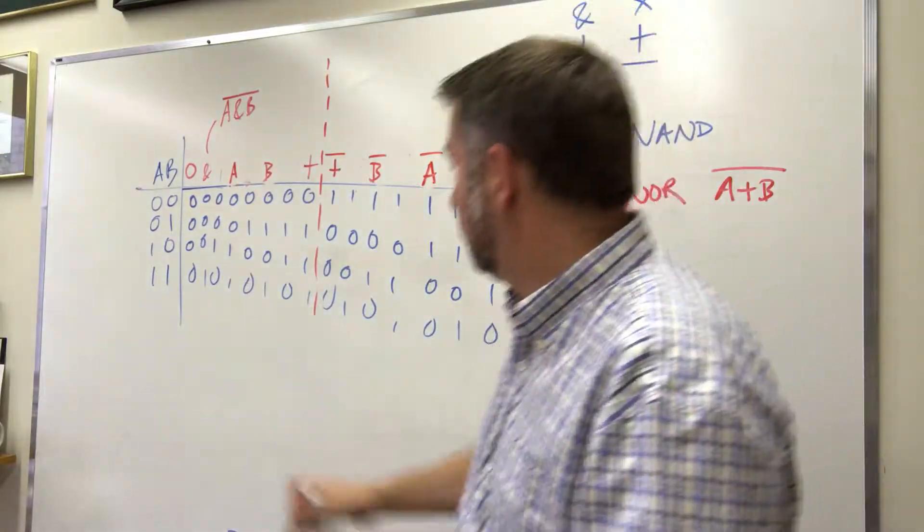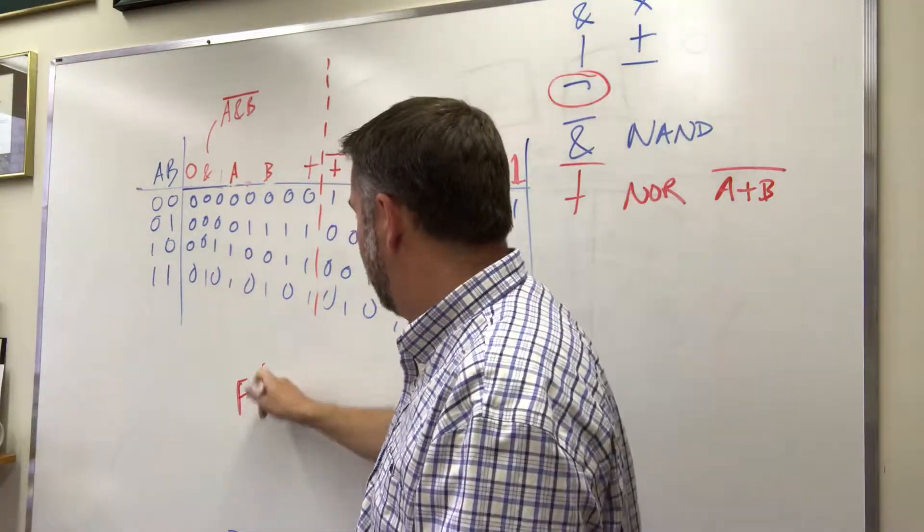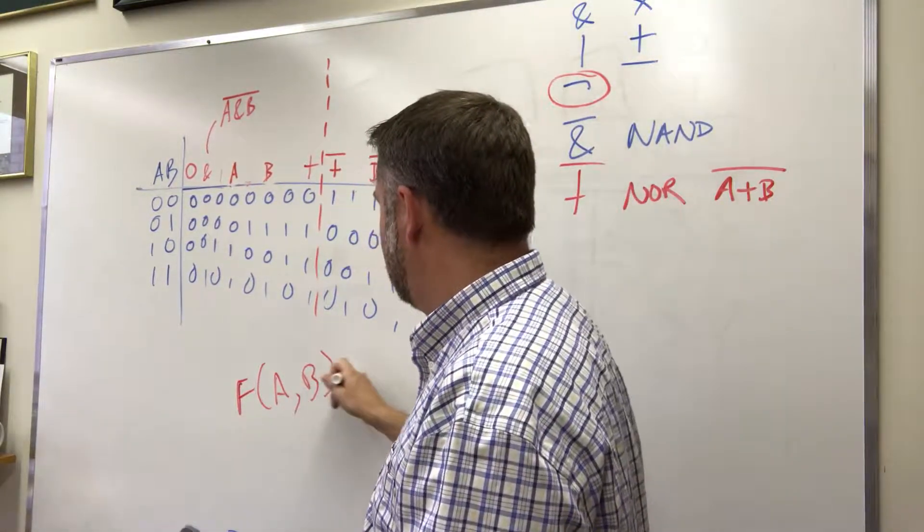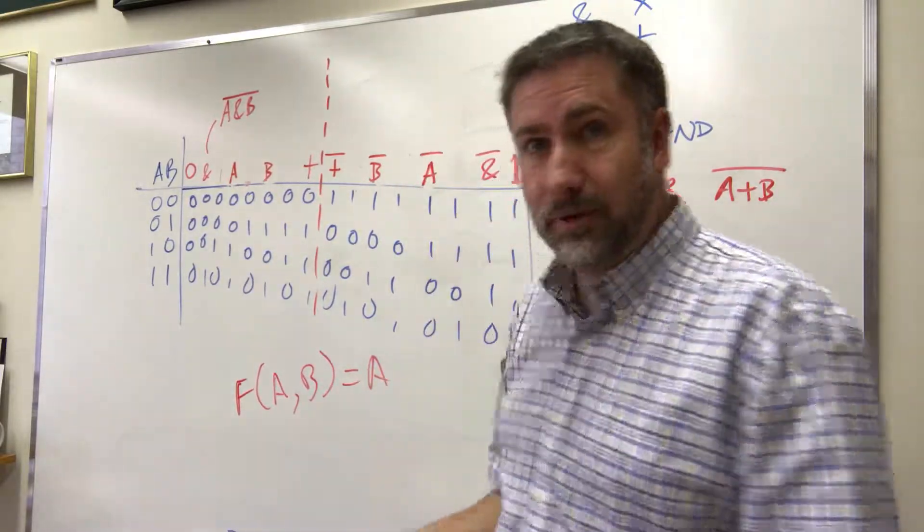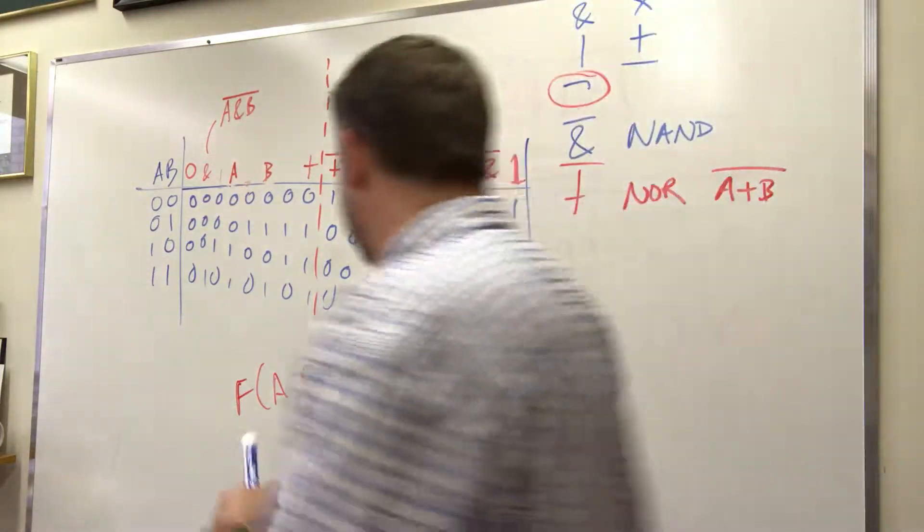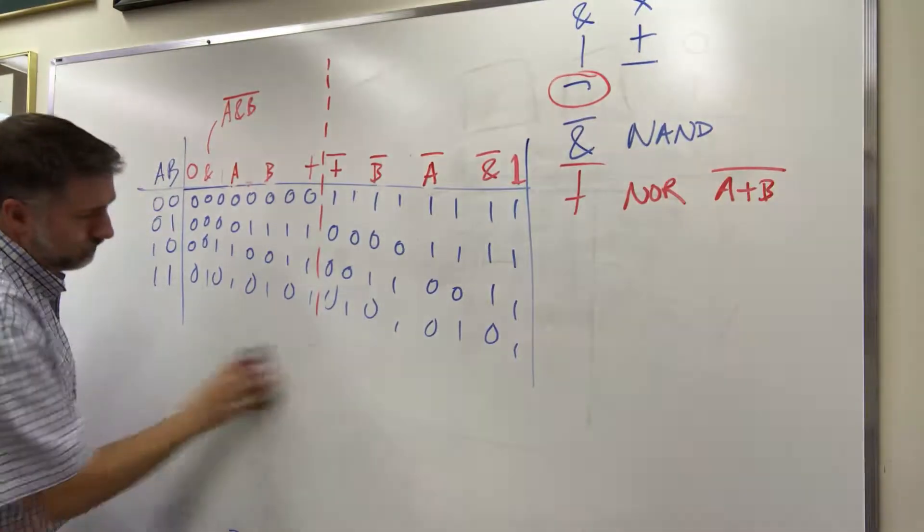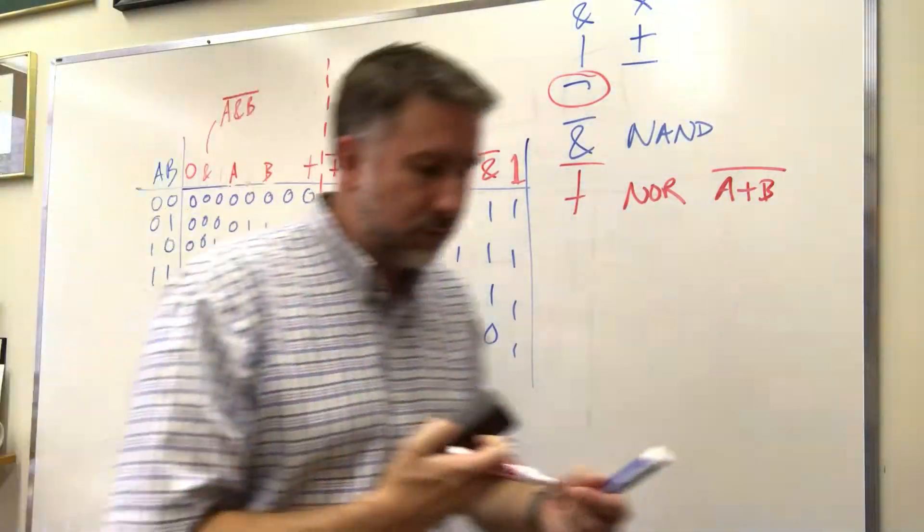It's a valid result, right. Function of a and b equals a. That's a perfectly valid function. Not that interesting because we're throwing away information. And that's a thing that we do sometimes.